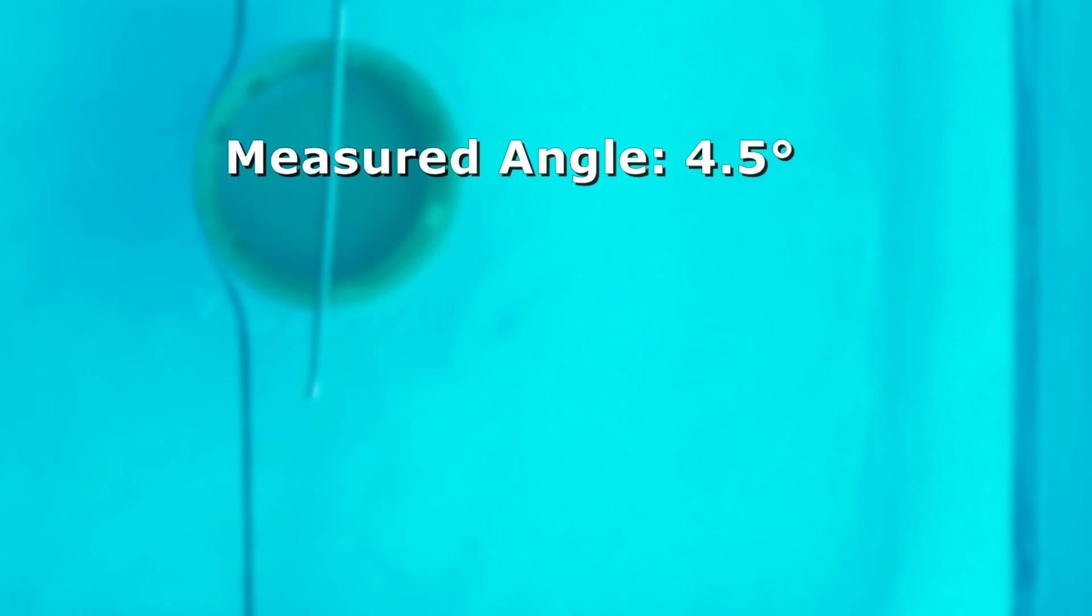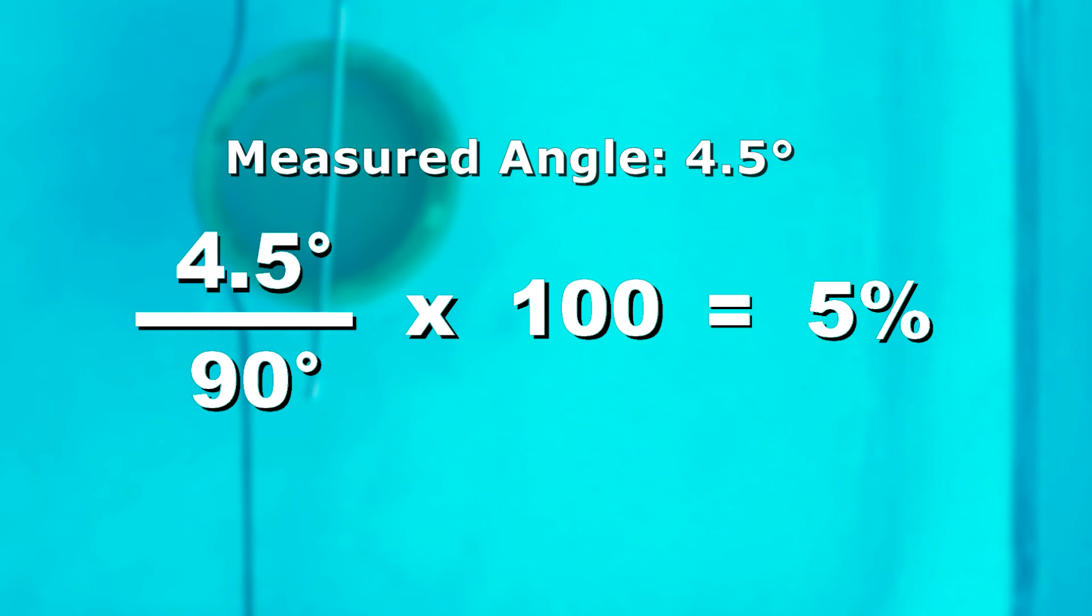We have some error in here, so let's calculate that. Well for our experiment, the most that we could be off is 90 degrees. Since 90 degrees is the most we could be off, then all you need to do for this calculation is take the angle of your measurement and divide that by 90. Then multiply that by 100, and that is calculating your percent error. My experiment was 5% off. I had 5% error. Hypothesis supported.